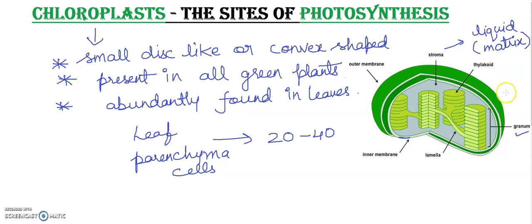The stroma has a system of membranes consisting of many flattened, fluid-filled sacs. This membrane system is called the thylakoid membrane, and each individual flattened fluid-filled sac is called a thylakoid.